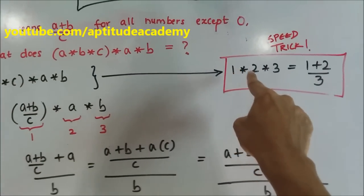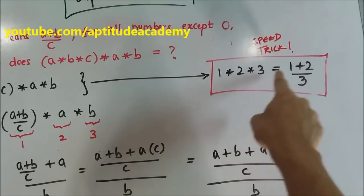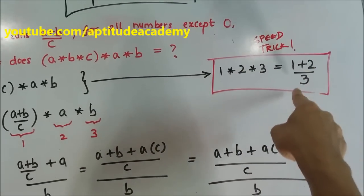You assign them as first term, second term, and third term. So your speed trick here is: first term into second term into third term will be first term plus second term divided by third term.